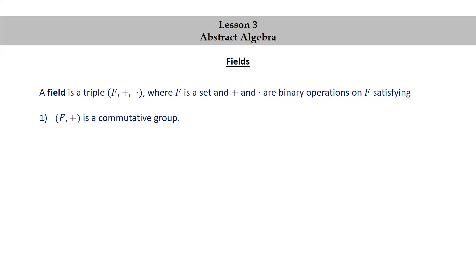The first meta-property is that (F, +) is a commutative group. Remember that being a commutative group means that we satisfy the following. Closure: for all x, y in F, x + y is in F.